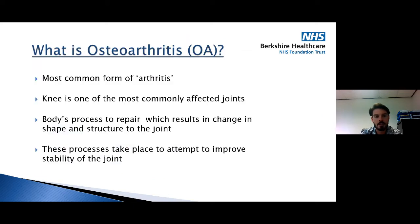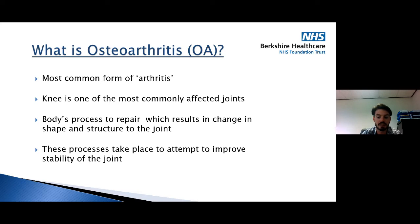Osteoarthritis is the most common form of arthritis. Many of you may be familiar with rheumatoid arthritis, and there will be some overlap, but our main concentration today is osteoarthritis of the knee — the most commonly affected joint, followed closely by the hip. Osteoarthritis is actually the body's process to try and repair and replenish the knee, resulting in changes in shape and structure to the joint. These processes are attempting to stabilize the joint, but we should also take active approaches to improve knee stability.